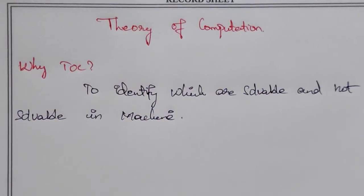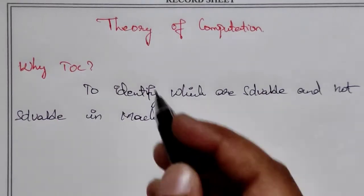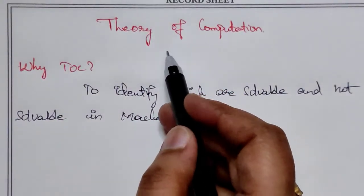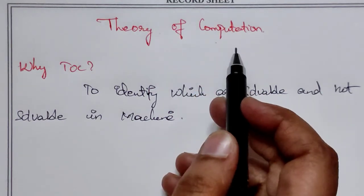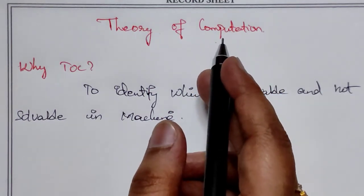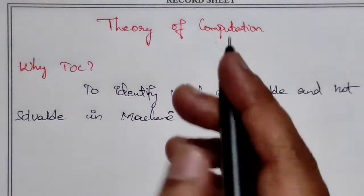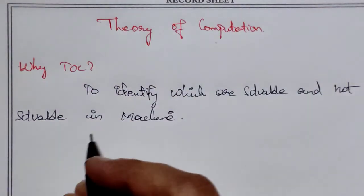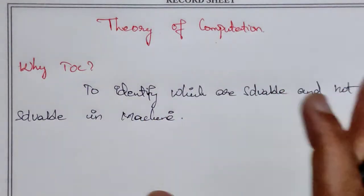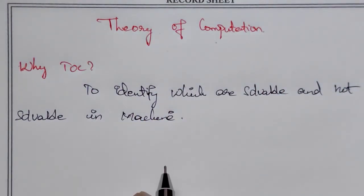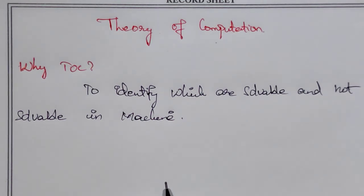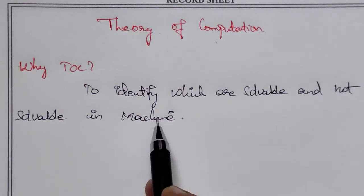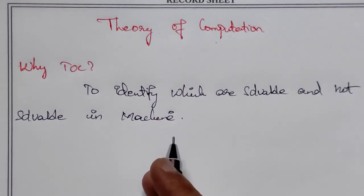Hello everyone. Here we go for theory of computation. This is the fundamental and most important subject in engineering. So why we go for theory of computation? To identify the solvable and non-solvable problems in a machine — what problems are solvable and what problems are unsolvable.